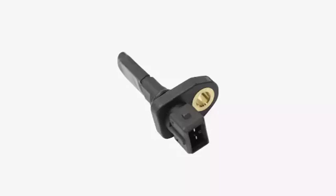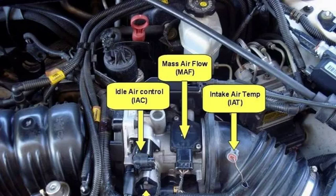Hey everyone, and welcome back to my channel. Today we're going to be talking about a fairly common fault code that can pop up on a lot of different vehicles — P0111, which stands for Intake Air Temperature Sensor Performance/Limit Problem. This code can be a bit of a pain to diagnose because it can be caused by a few different things. But don't worry, in this video we're going to walk you through the steps on how to diagnose and fix this code so you can get your car back on the road in no time.